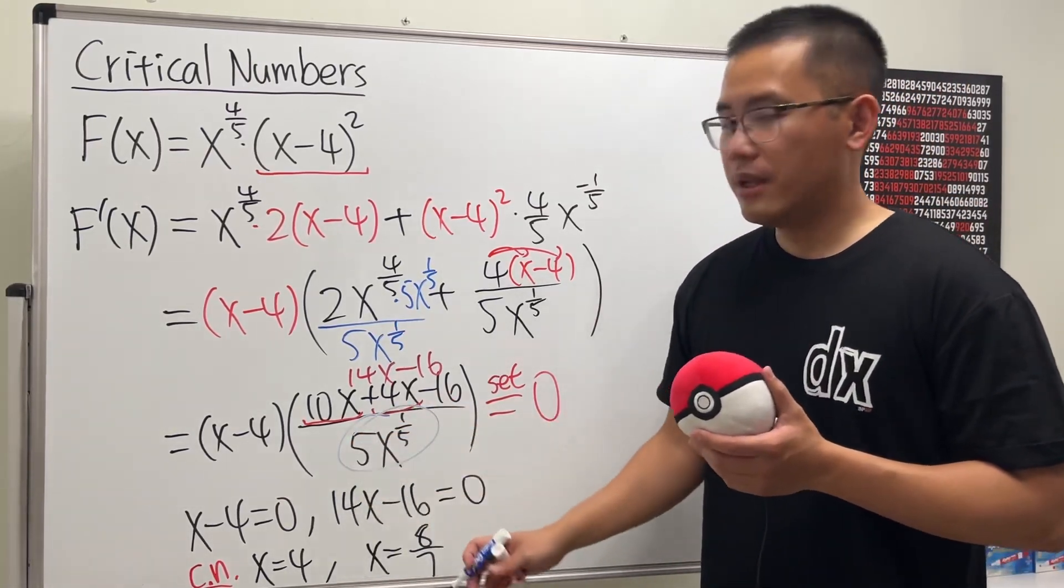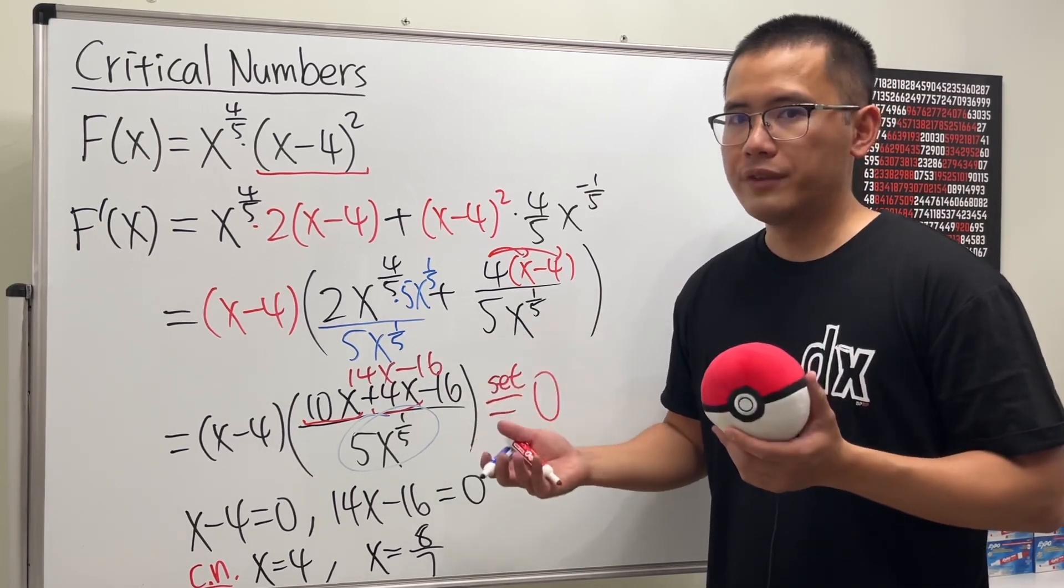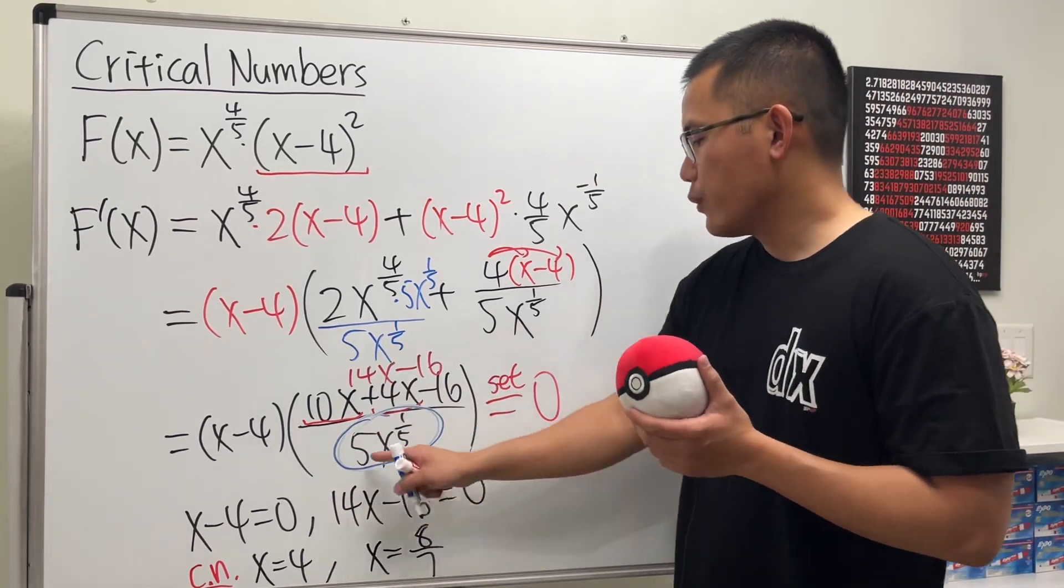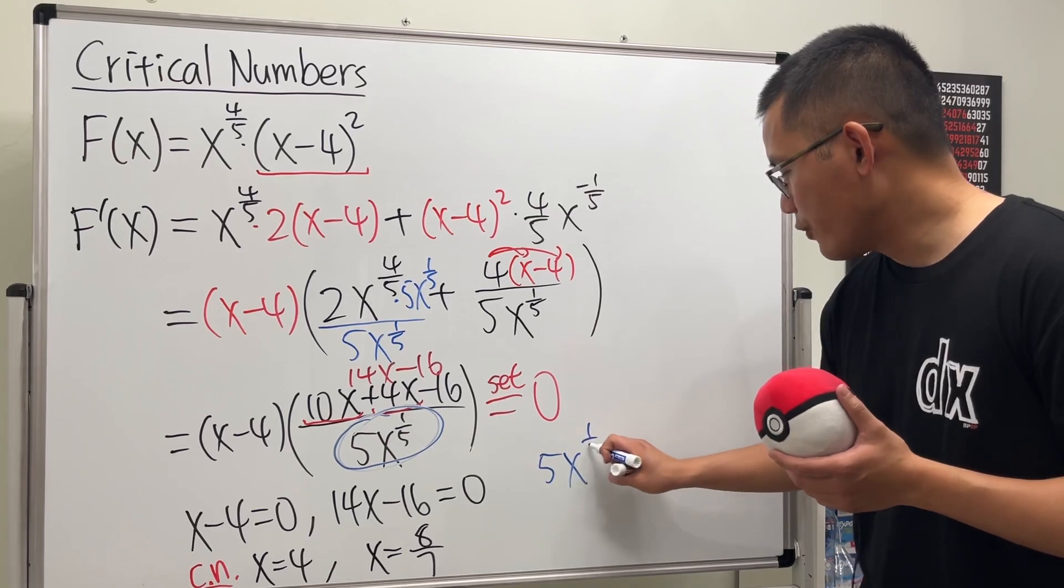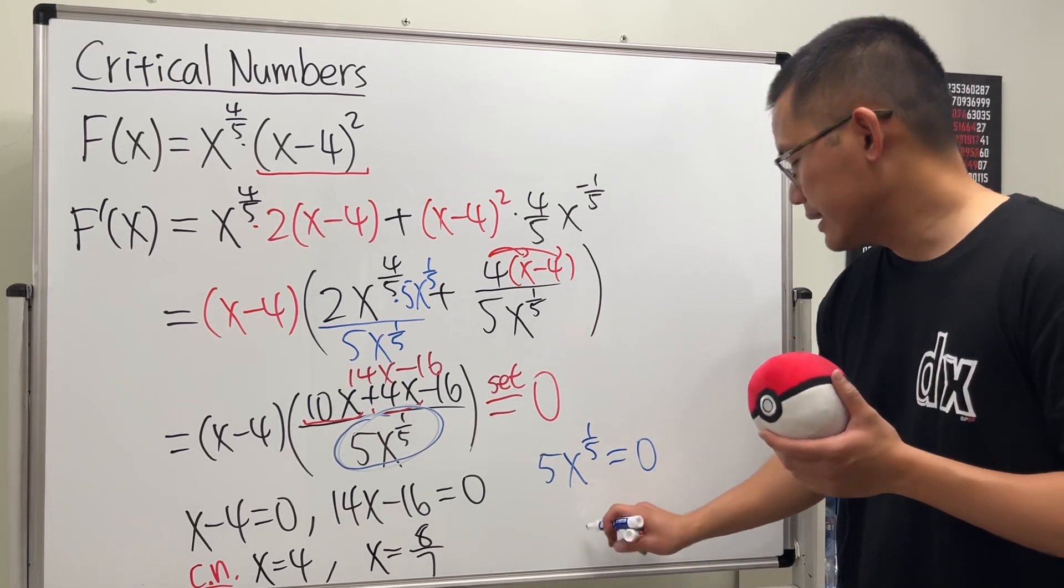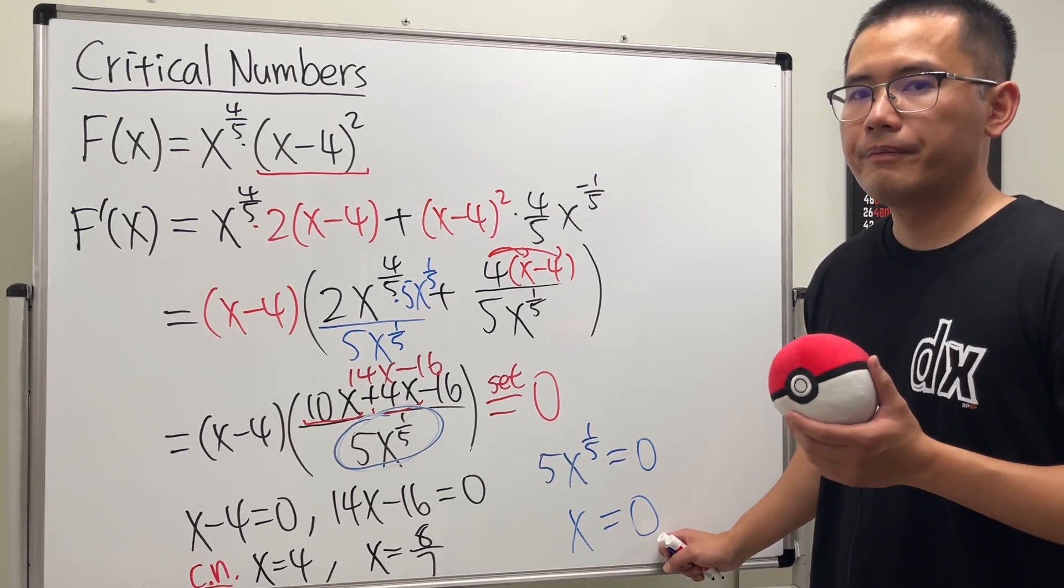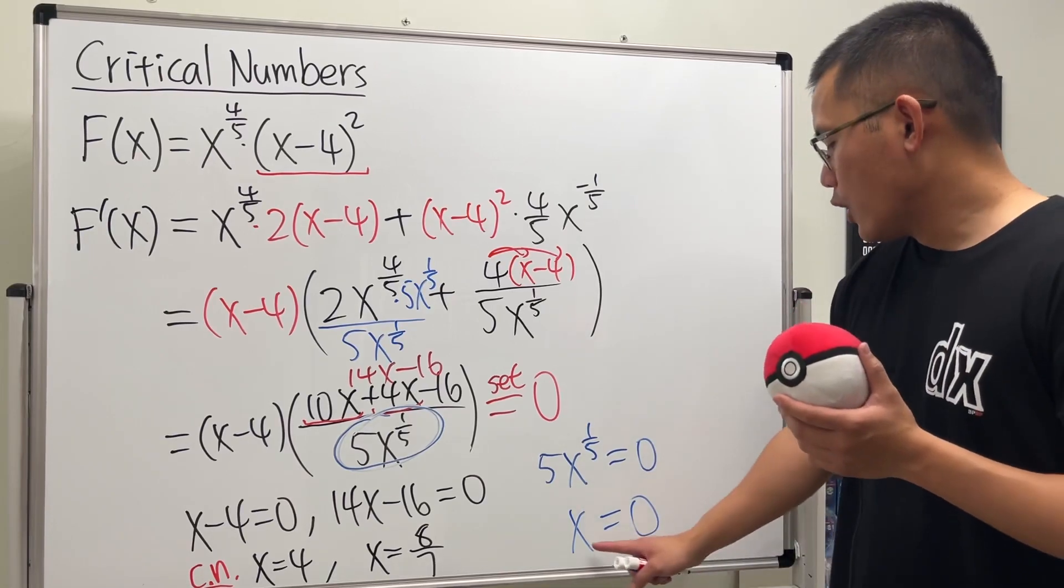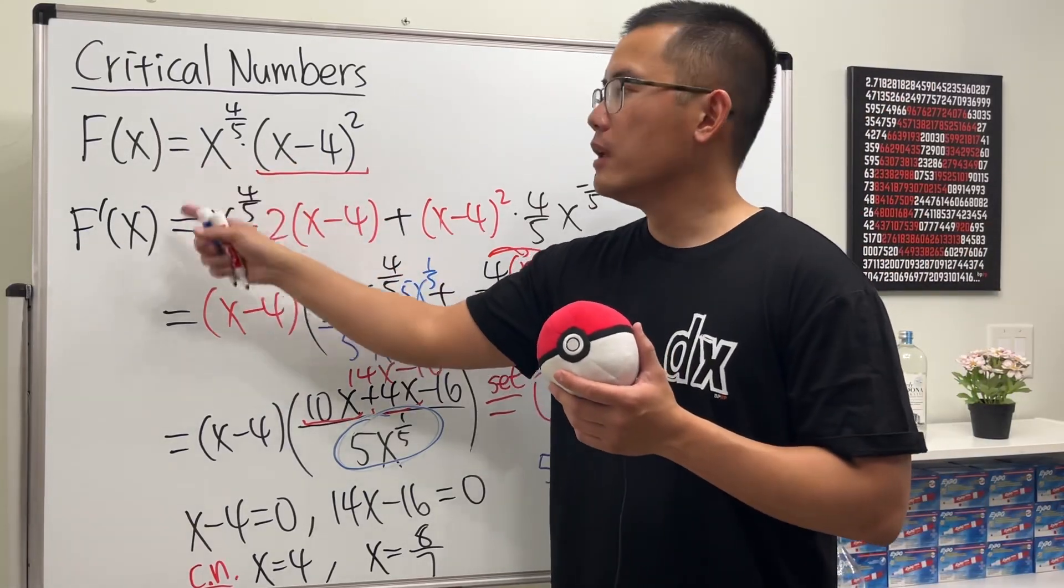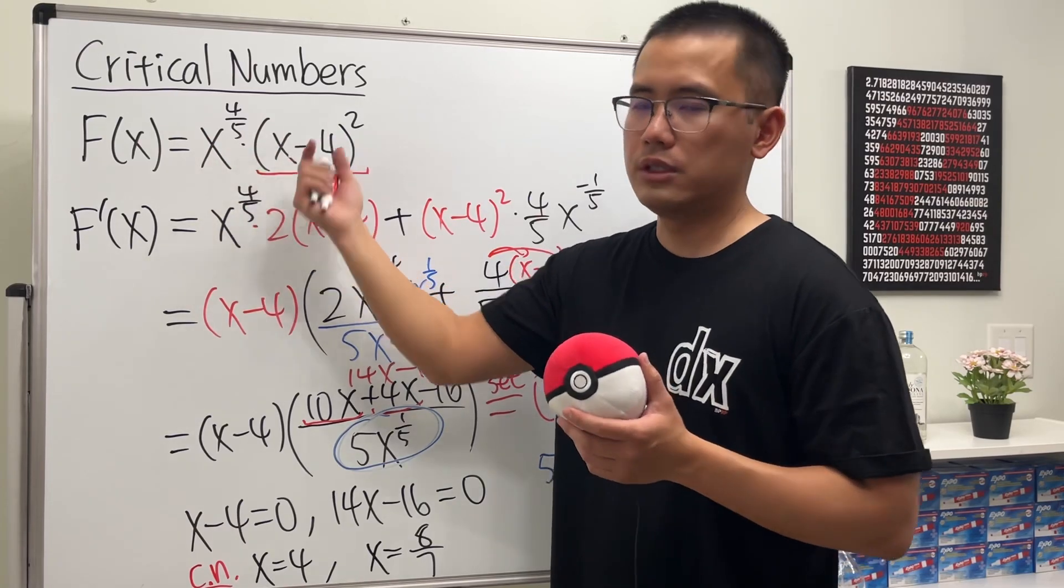Now there is actually one more. We have to look at this right here, because we have to find out where the derivative is undefined—the derivative doesn't exist. Here we have a fraction, so we're going to put 5x^(1/5) and make it equal to 0 as well. This case is just x equals 0. But is this considered a critical number? Yes, because when x equals 0, this is actually in the domain of the original function. You can legitimately put 0 back to the original function and it will give you a nice number, which is 0.